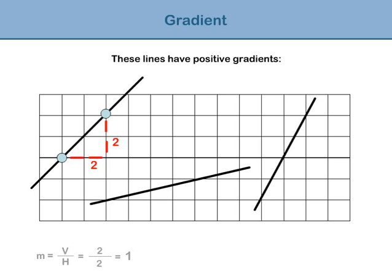Let's look at another example. Again, plot 2 points on the line and draw a line from each to make a right-angled triangle. Count the number of vertical and horizontal squares to get V and H. V equals 1 and H equals 4. M equals V divided by H, so M equals 1 divided by 4. We can leave our answer as a fraction, so the gradient equals 1 quarter.